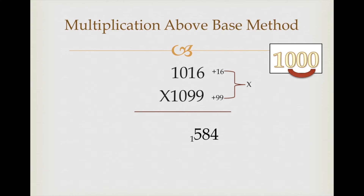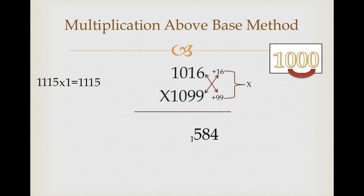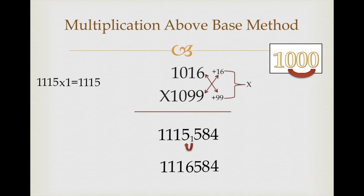Now check whether the cross additions are the same: 1099 plus 16 equals 1115, and 1016 plus 99 also gives 1115. Multiply 1115 by 1 because the base is 1000, giving 1115. Write down 1115 and adjust the carry: write the last three digits 4, 8, 5 as they are, then adjust the carry — 1 and 5 makes 6, write 6, write 1, and 1 and 1. Our complete answer is 1116584.